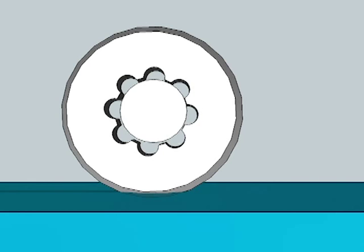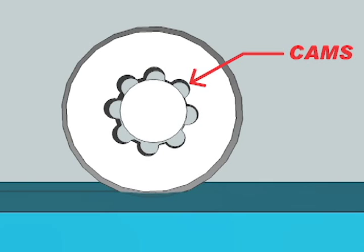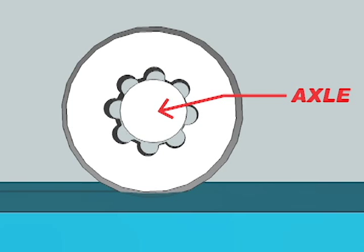All of this takes place at a micro level. The cutting wheel is only 3 millimeters in diameter. Around the inside of this tiny wheel are 7 little cams. The cams are what create the vibration as the wheel rolls around the axle.